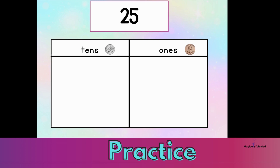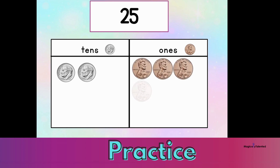Third, I am going to place the tens and ones — in our case dimes and pennies — on the place value chart. I will start in the tens place: one ten, two tens. Now let's move to the ones place: one, two, three, four, and five. That's five pennies.